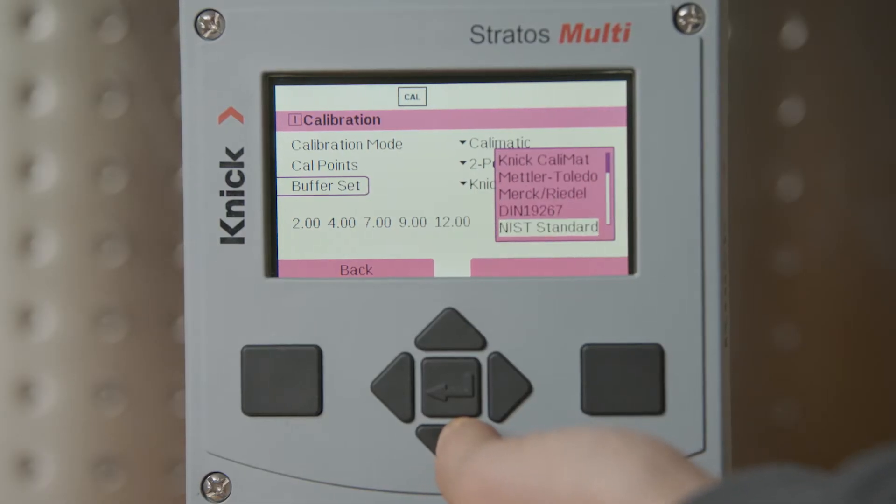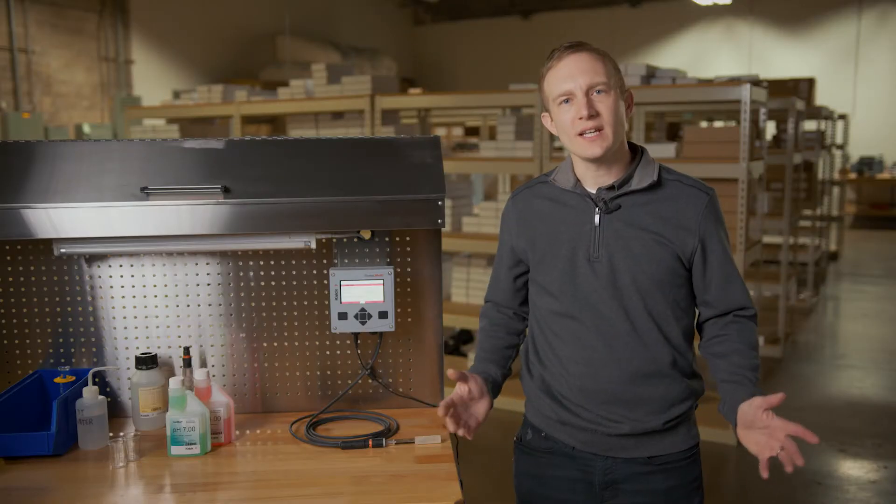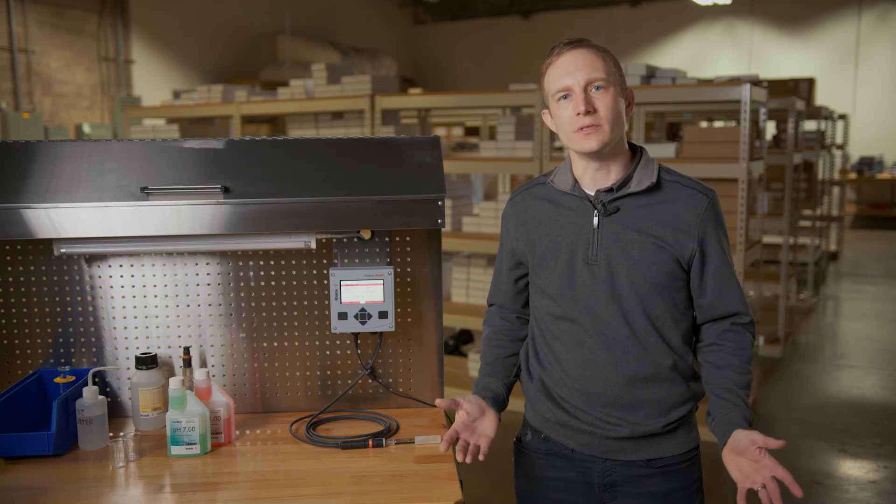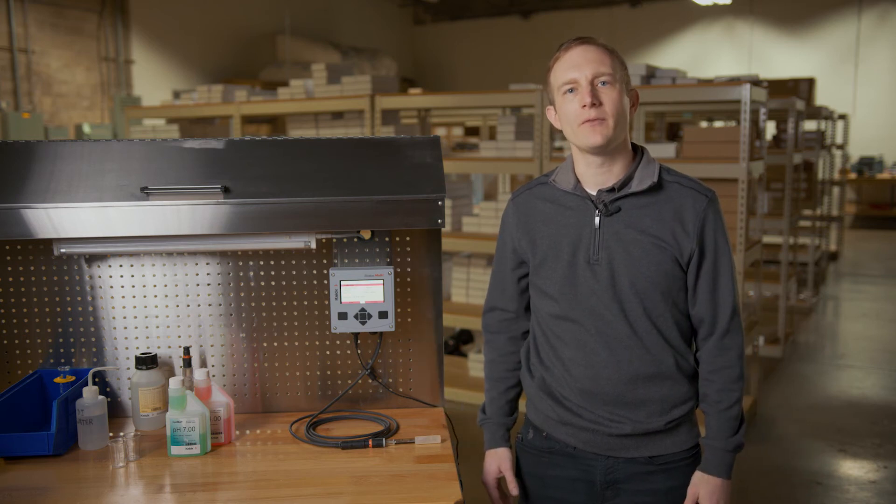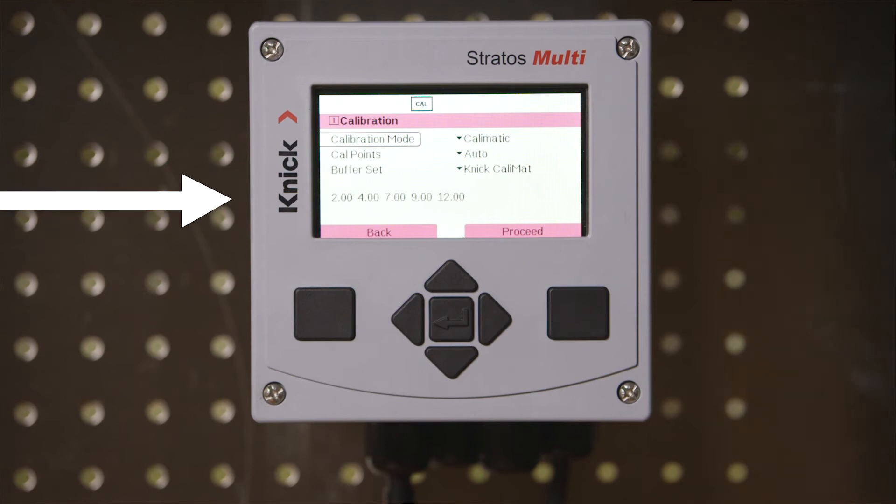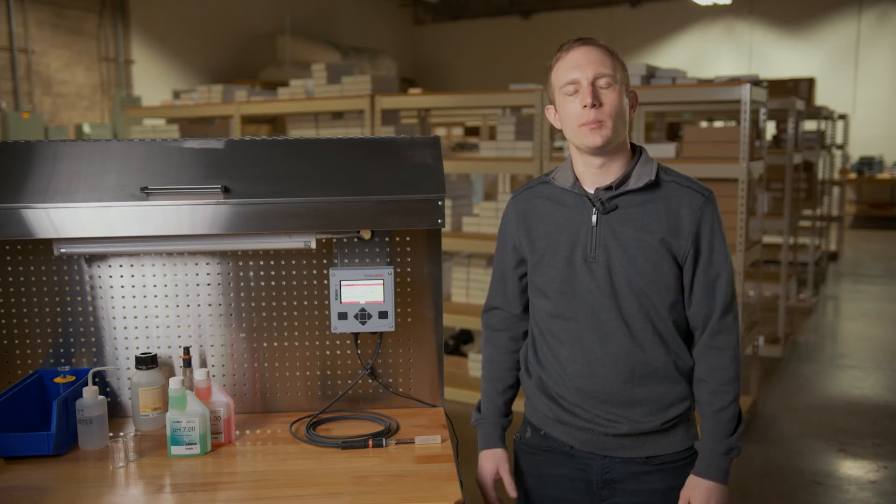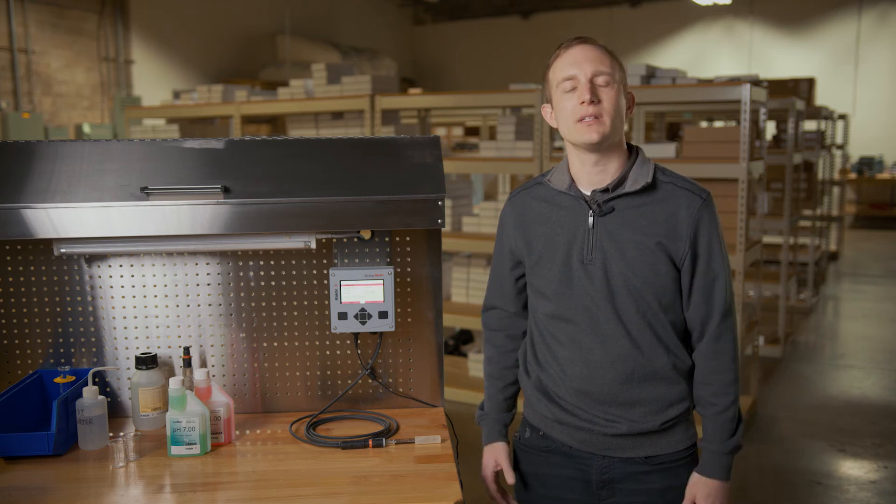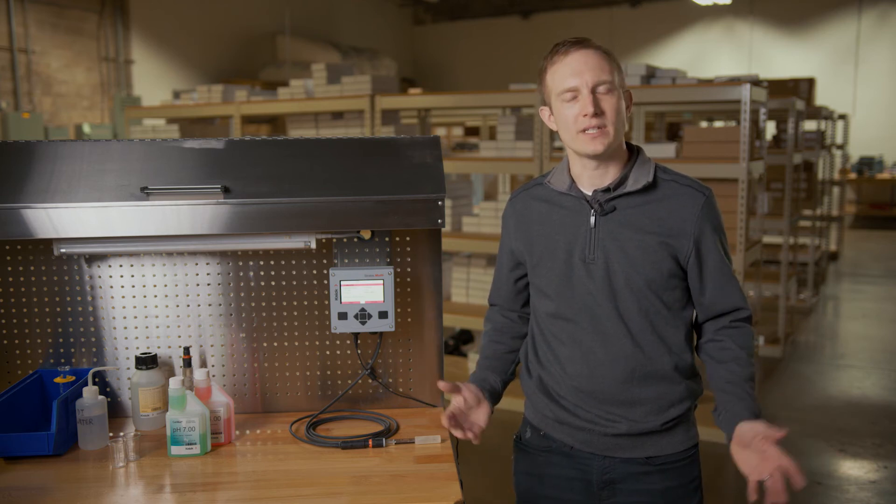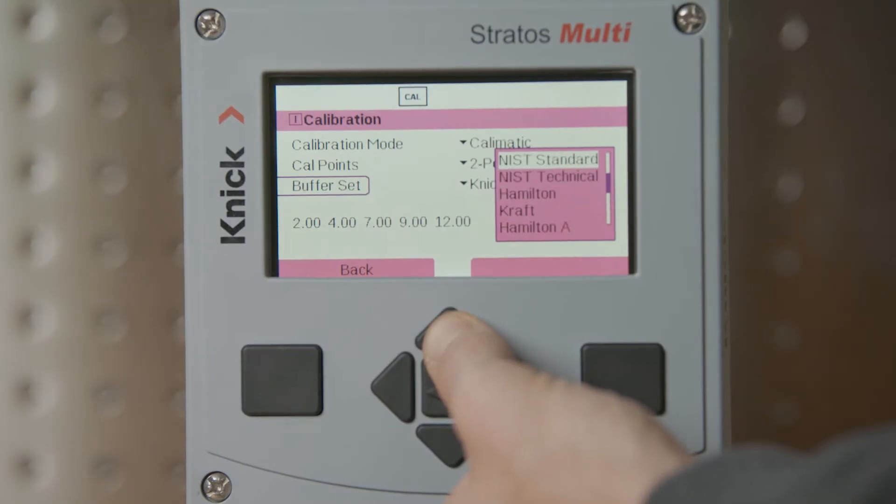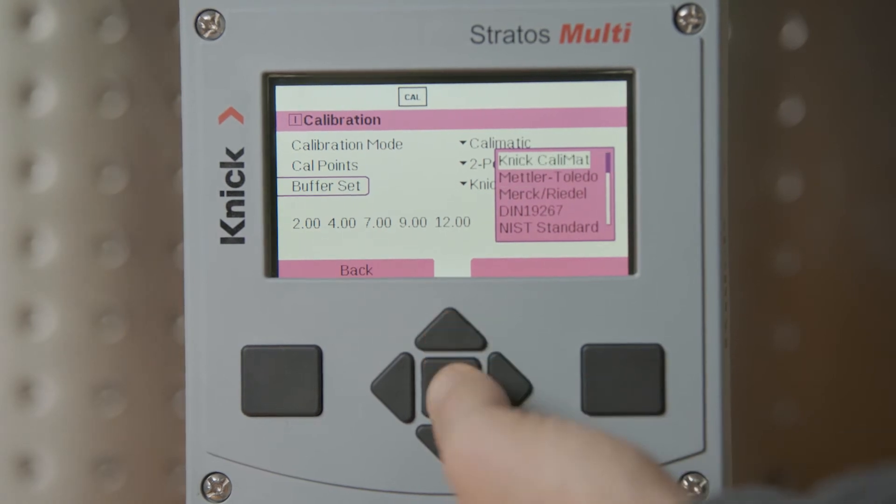The Multi has numerous buffer tables stored within its software for selection by the operator. It is important to note that NIST technical is most commonly used, however verification of your buffer values should be cross-checked against the values displayed at the bottom of the screen. A nice feature which is also available for selection is the ability to select a user-defined buffer table. We will select the Kinnick Calimat buffers and press enter to continue.